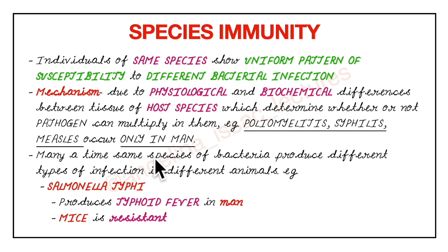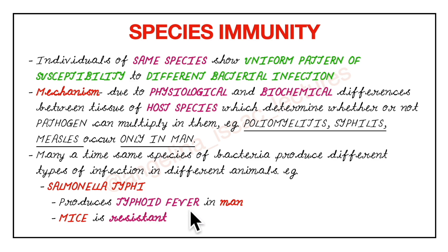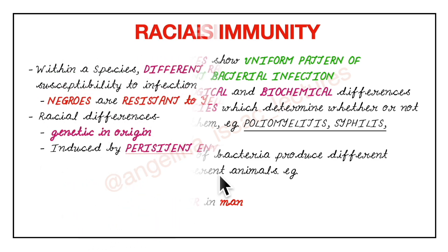Many times the same species of bacteria may produce different types of infection in different species. For example, Salmonella typhi produces typhoid fever in man, but mice are resistant to it.